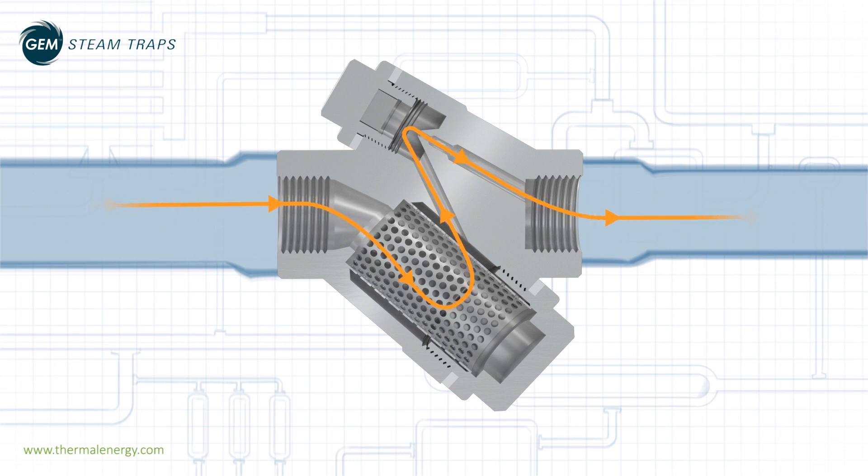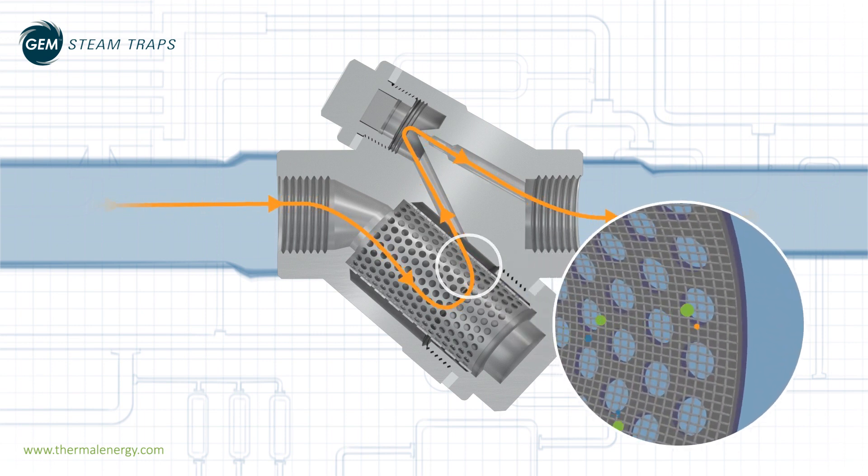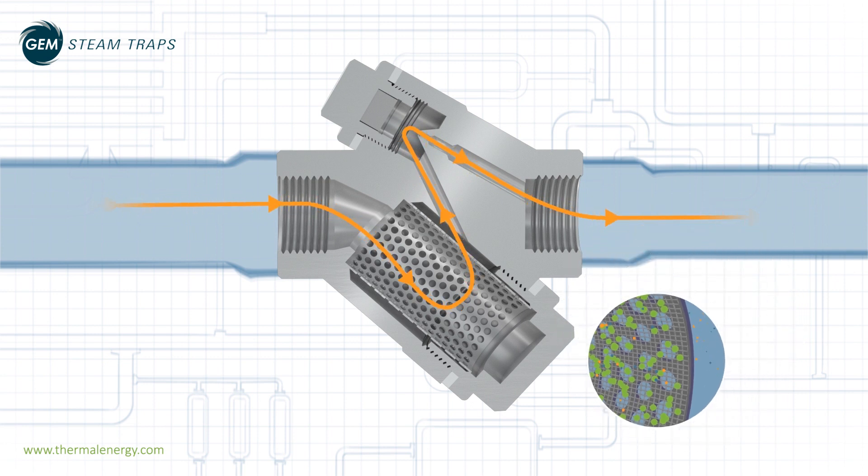To minimize service requirements, our GEM traps include a specially developed multi-stage filtration system. Within a GEM trap, the reinforced stainless steel mesh strainer basket is the primary means of removing debris. The strainer basket has a large surface area and a mesh size finer than the trap orifice. This optimal mesh size is designed to prevent blockage-causing debris reaching the orifice, while extending the intervals between cleaning.